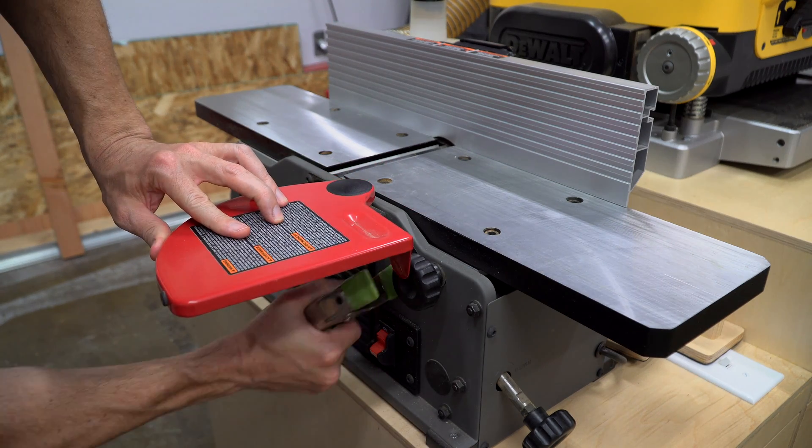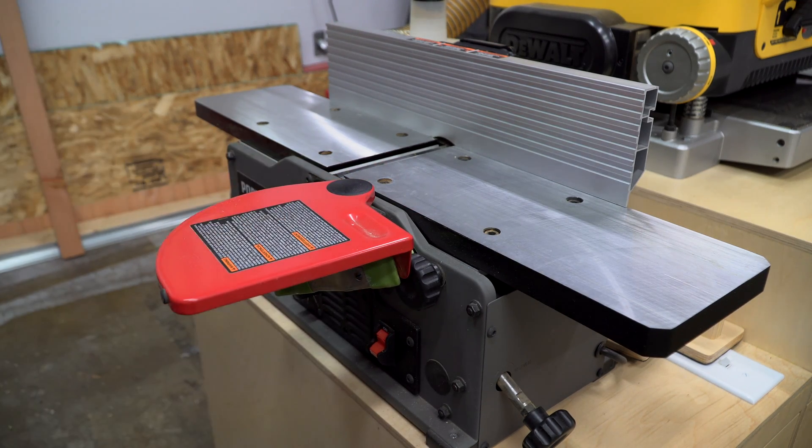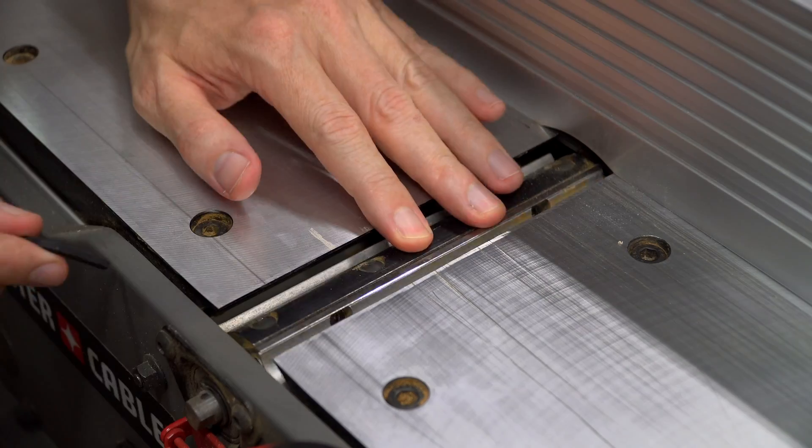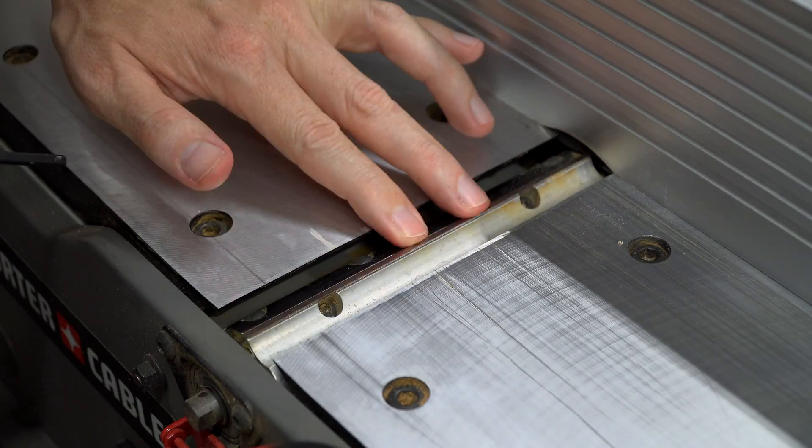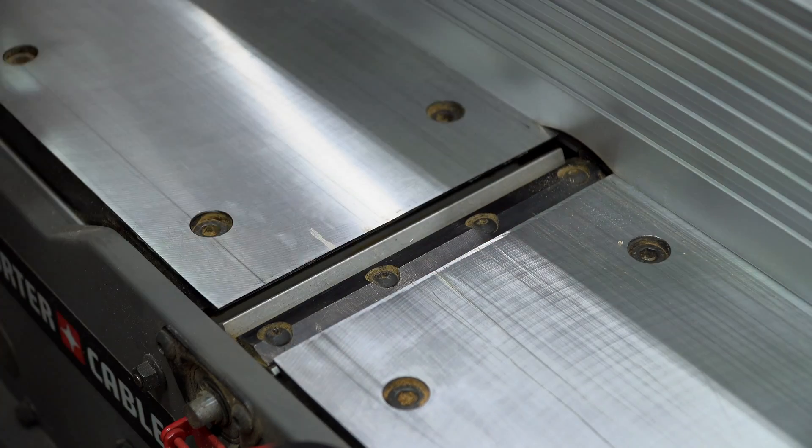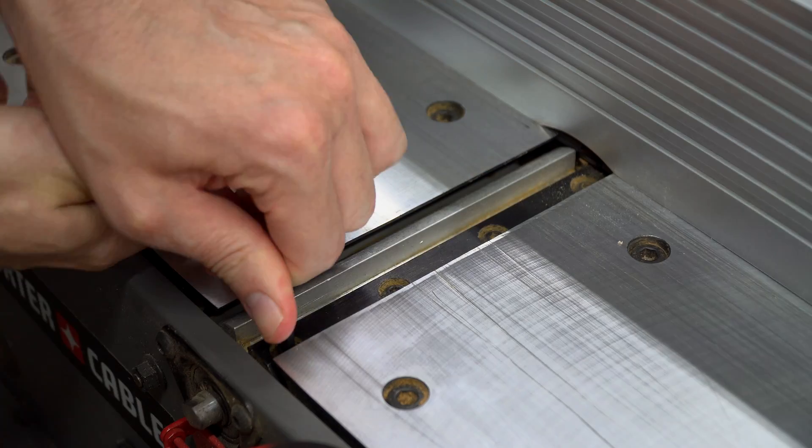First, clamp your blade guard so it's out of the way. If you have this jointer or one similar to it, it will have a couple of set screws and a handful of screws that hold a clamping plate down over the blade.